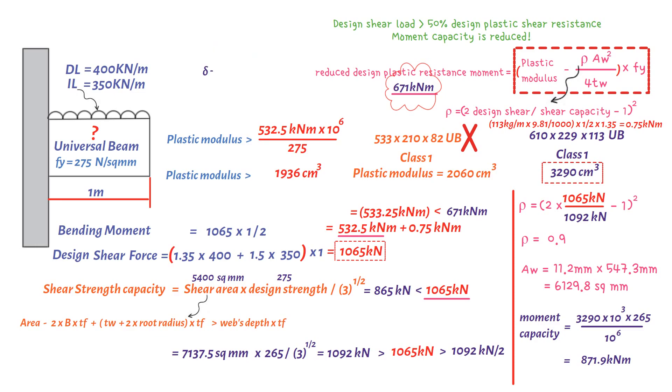We will use the following formula to determine the deflection of a cantilever beam under uniformly distributed load. We have 350 kilonewtons per meter imposed load, multiplied by the span length 1 meter to the power of 4, divided by 8, divided by Young's modulus.